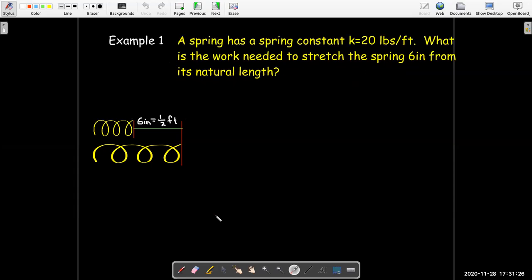So let's look at some examples. We're going to have a spring. It has a constant of 20 pounds per feet. And we'd like to know the work needed to stretch the spring 6 inches from its natural length. So we need to be careful about the units here. Our constant is given in pounds per feet. The distance is given as 6 inches. So we're going to change 6 inches to a half foot.